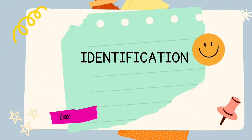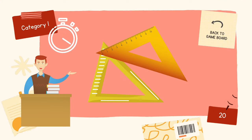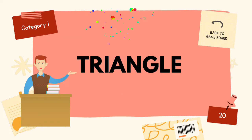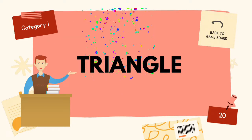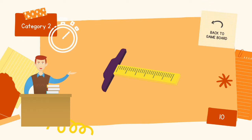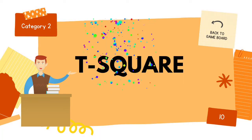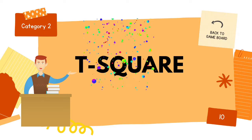Let's play identification. Is this used for drawing vertical and oblique lines? The correct answer is triangle. This is used as a guide in drawing horizontal lines and in measuring up to 48-degree straight lines. The correct answer is T-square.